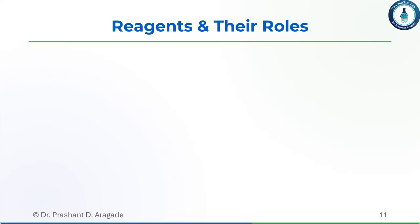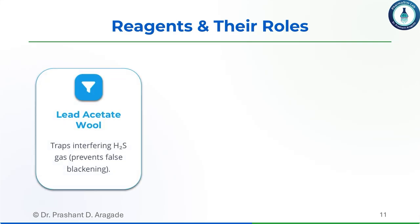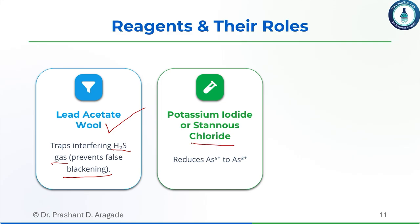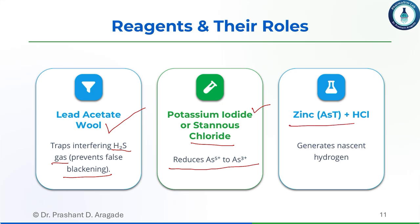Regarding the reagents used and their roles: lead acetate wool is placed within the Gutzeit test tube to trap H2S gas and prevent blackening of the mercury chloride paper. Stannous chloride or potassium iodide is added for reduction of pentavalent arsenic to trivalent arsenic. A mixture of zinc and hydrochloric acid is used for the formation of nascent hydrogen, which then reacts with arsenious acid to produce arsine gas.